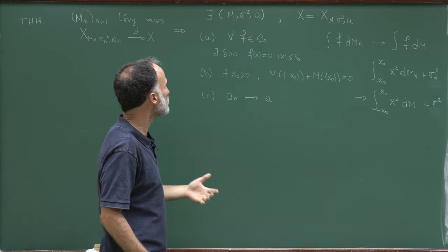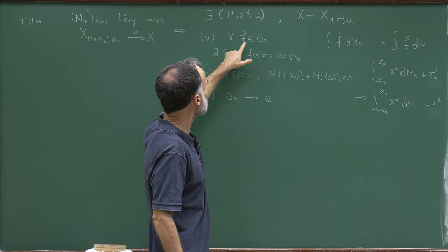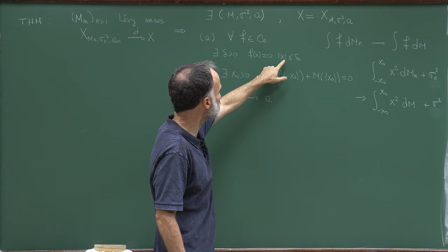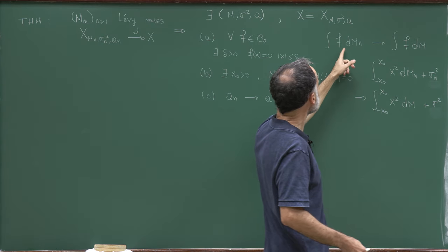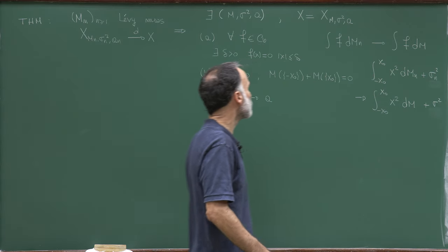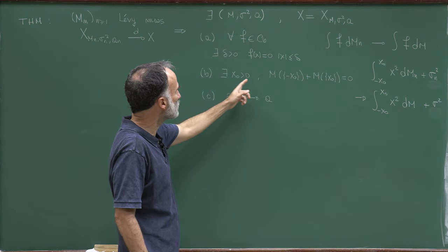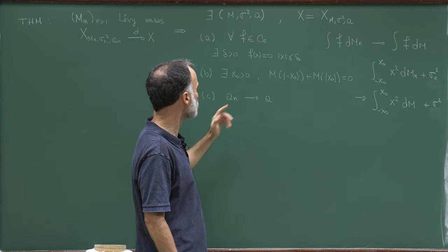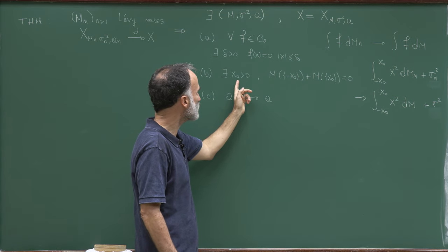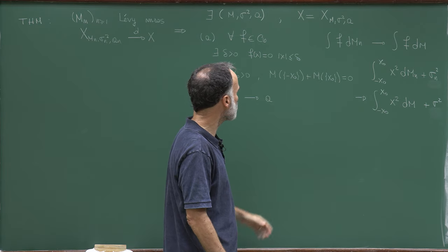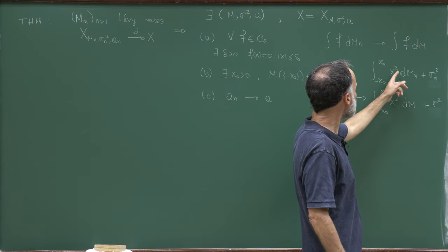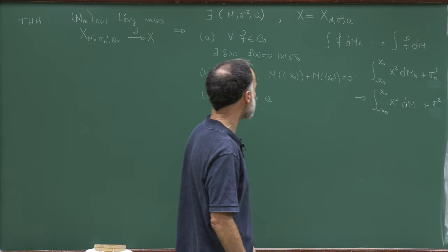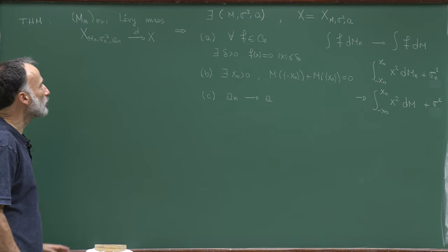Moreover, this triple converges to that one in the following sense. First, for any continuous bounded function f which vanishes in a neighborhood of the origin — so there exists δ such that f(x)=0 if |x|≤δ — then the integral of f with respect to Mn converges to ∫f dM. Second, there exists a continuity point x0 of M such that x0 and -x0 are both continuity points, and the integral over (-x0, x0) of x² dMn plus σn²t²/2 converges to the corresponding expression. Finally, An converges to A.